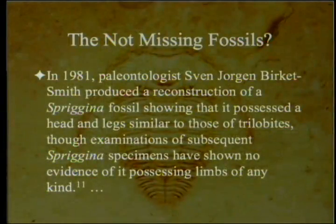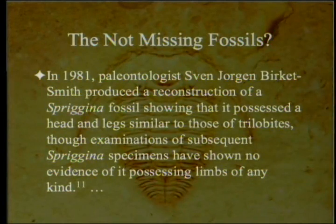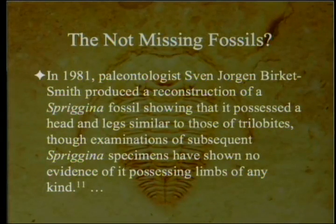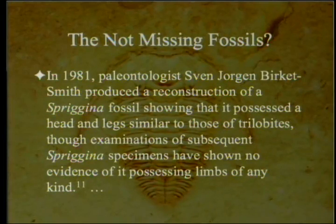In 1981, paleontologist Sven Jorgen Birkett-Smith produced a reconstruction of a Sprangina fossil showing it possessed a head and legs similar to those of trilobites, though examinations of subsequent Sprangina specimens have shown no evidence that it possessed limbs of any kind. So you can call it a trilobite if you reconstruct it that way, but the reconstruction doesn't match the fossils.